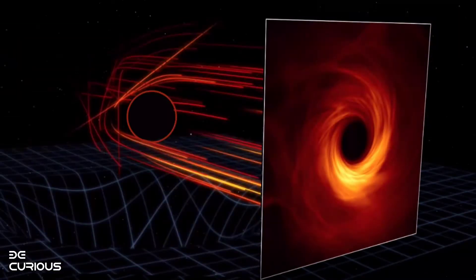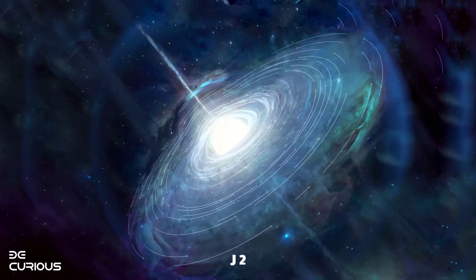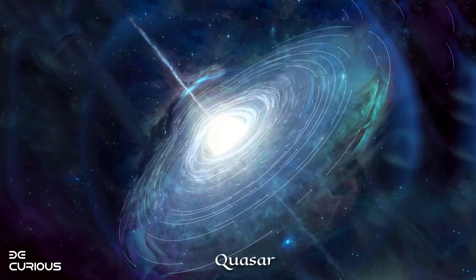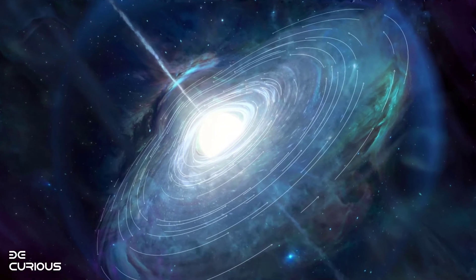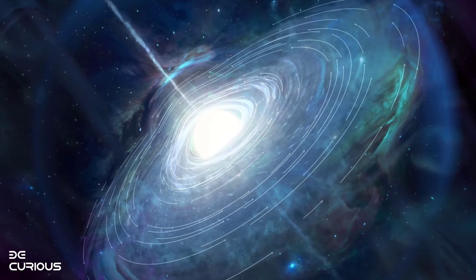Although black holes cannot be imaged directly because they don't let light escape, J2157 is actually classed as a quasar, or quasi-stellar radio source, which are extremely bright objects powered by black holes.